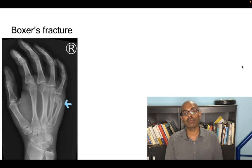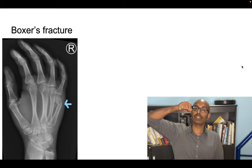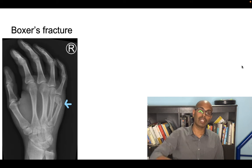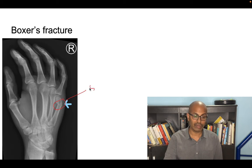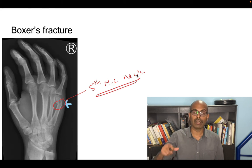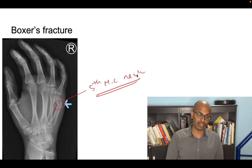Next, very important, is the boxer's fracture. When patients punch a wall or punch somebody, the fifth metacarpal neck is fractured and this is called a boxer's fracture. Remember that.